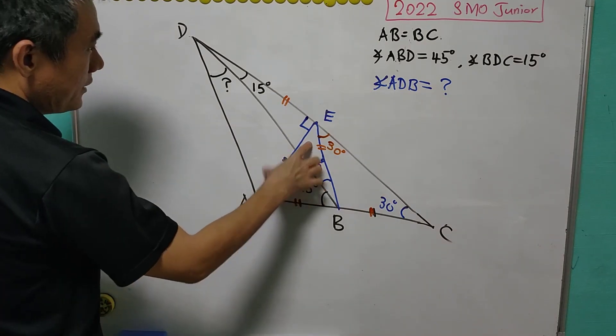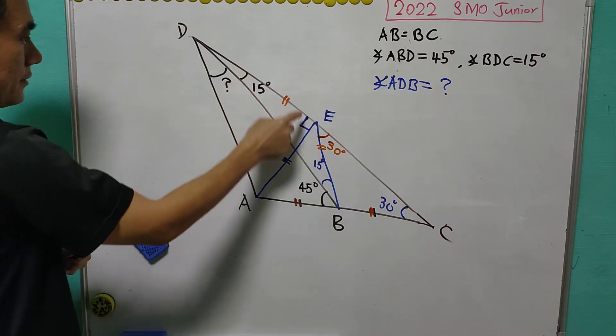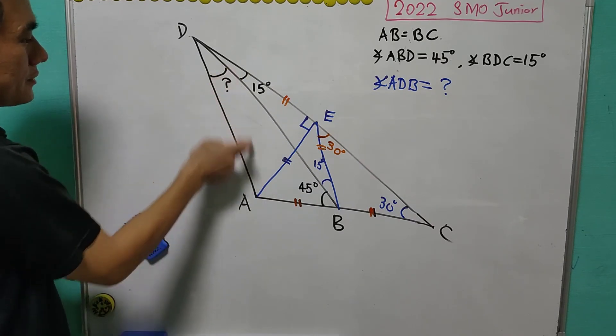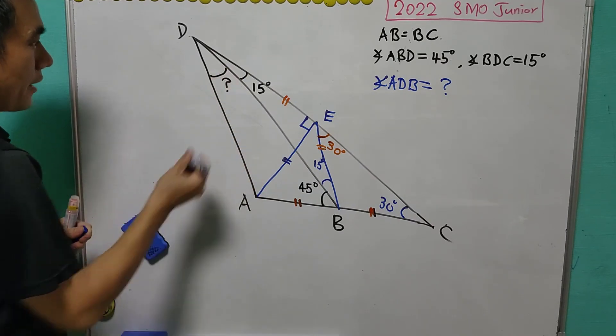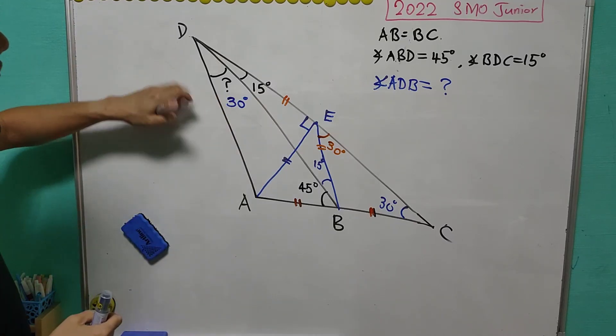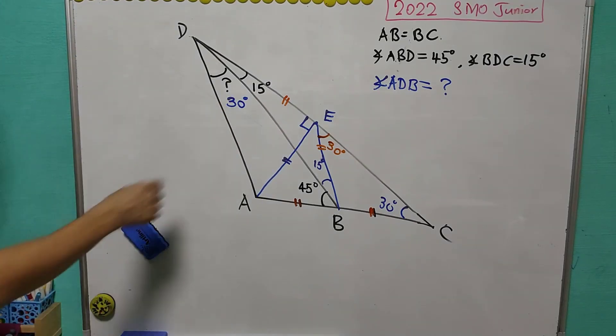Finally, AE equals to DE, and this is a right angle triangle. Each of these two angles is 45 degrees, and therefore, the angle that we want to find will be equal to 30 degrees. And hence, the answer for this question is 30 degrees.